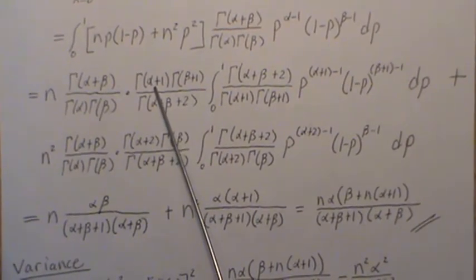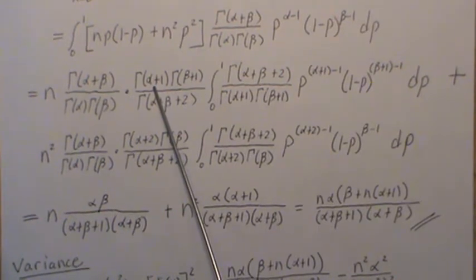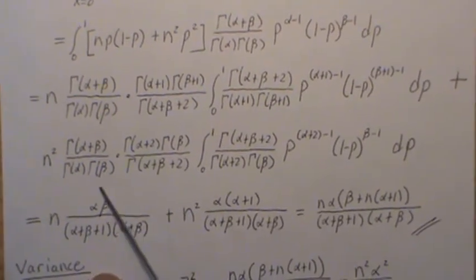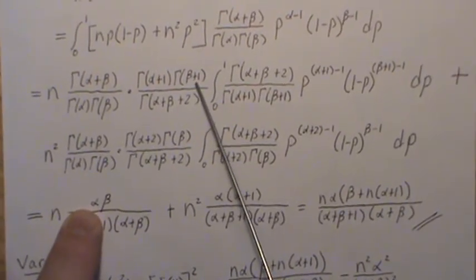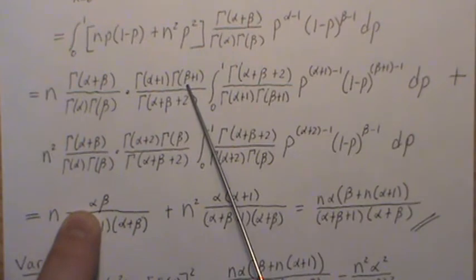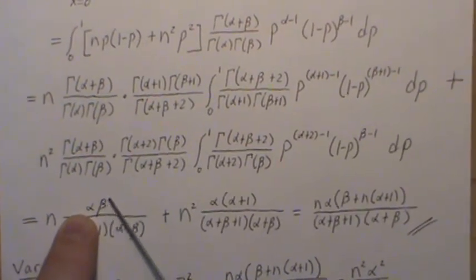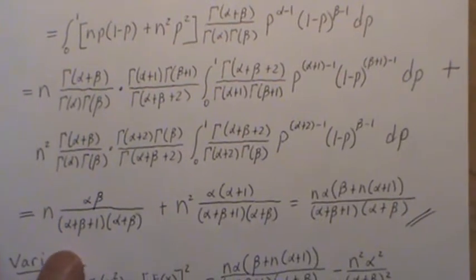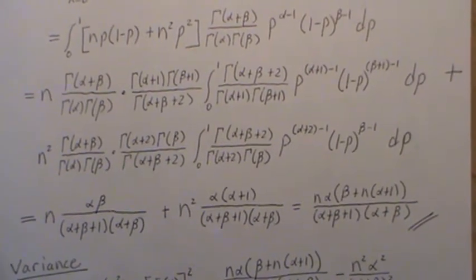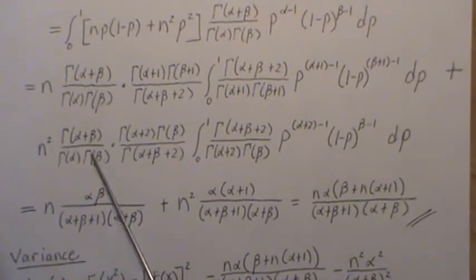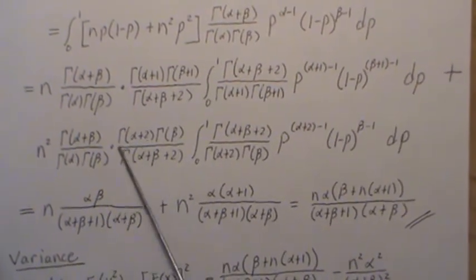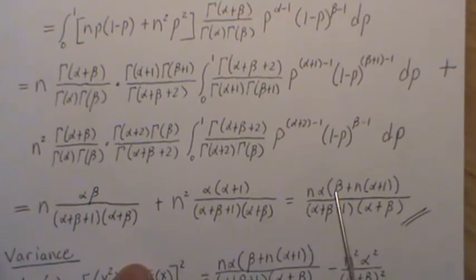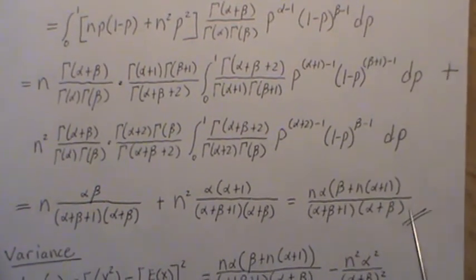Simplifying: gamma of alpha plus 1 equals alpha times gamma of alpha, so those gammas cancel and we're left with just alpha. Similarly, gamma of beta plus 1 equals beta times gamma of beta, the gammas cancel, leaving just beta. The denominator reduces to (alpha plus beta plus 1) times (alpha plus beta). For the N squared piece we get a similar reduction. With like denominators the numerators add, and this is the second moment.